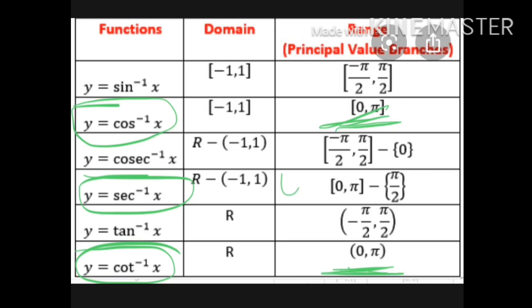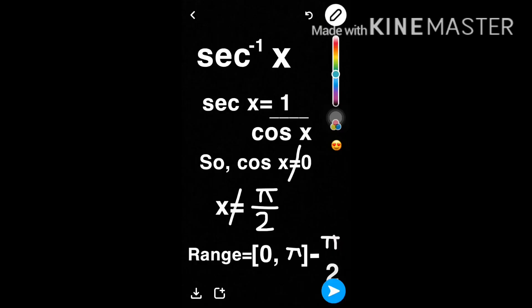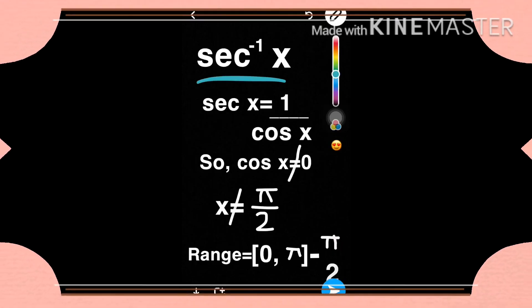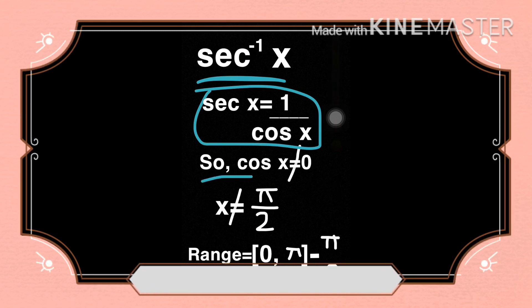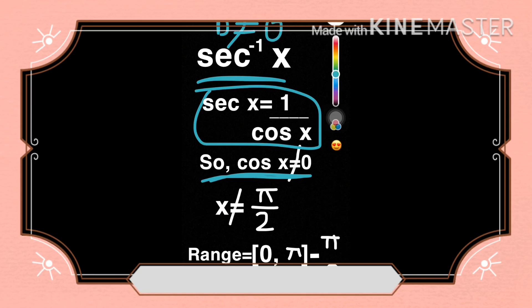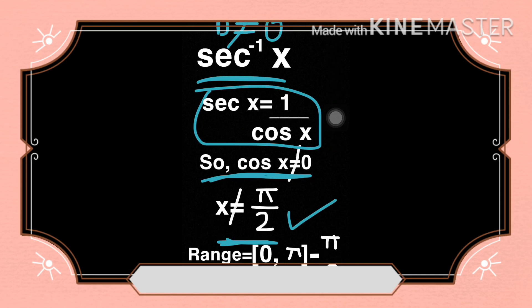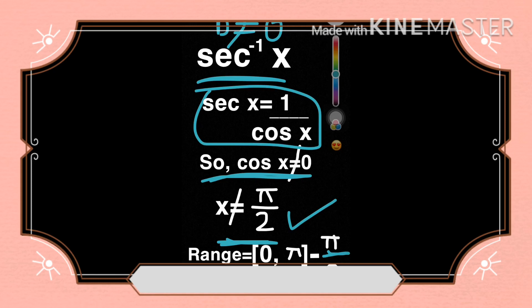It seems difficult but it is very easy. Here is the proof for the principal value branch of secant inverse x. Secant x equals 1 upon cos x, as it is the reciprocal of cos x, and the denominator cannot be 0. So cos x cannot be 0. Cos x equals 0 at x equals pi by 2, so x cannot be pi by 2. Therefore its range is closed interval 0 to pi, excluding pi by 2.